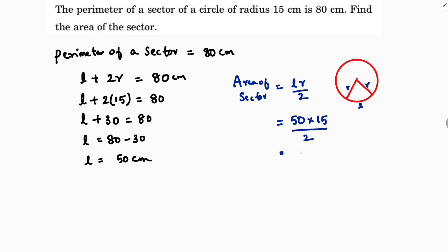So here 2 times 25. So now 25 times 15, I'll get very clearly here 375 centimeter square. So area of a sector is 375 centimeter square.